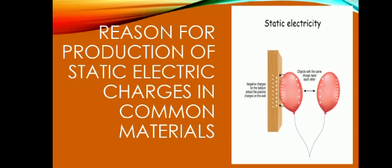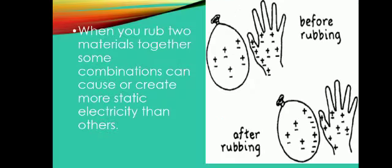Reason for production of static electricity: electric charges in common materials. We see when you rub two materials together, some combinations can cause or create more static electricity than others. See the diagram when we rub our hands with balloon.